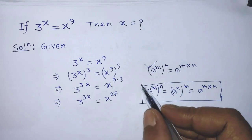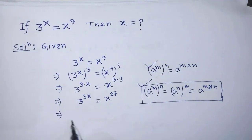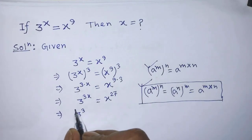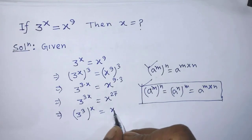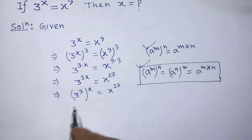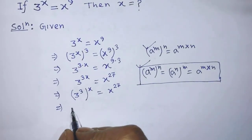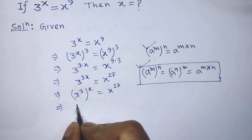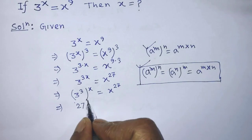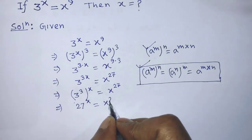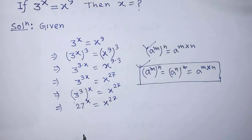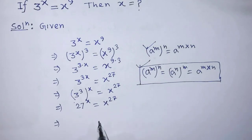After that, according to this formula, we can write from the left hand side: 3 to the power 3, whole to the power x, is equal to x to the power 27. So now we can compare both sides of this equation. After comparing, we can write x is equal to 27.